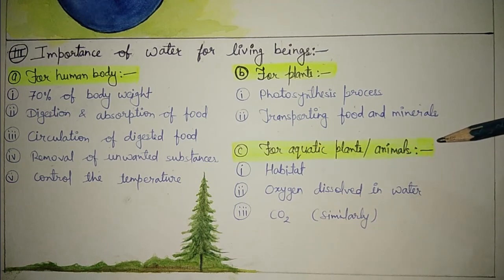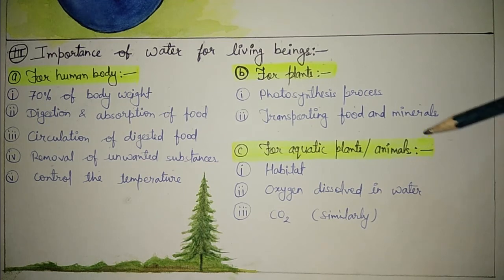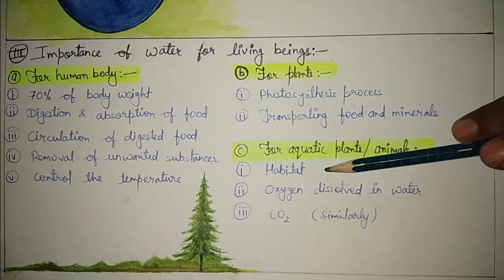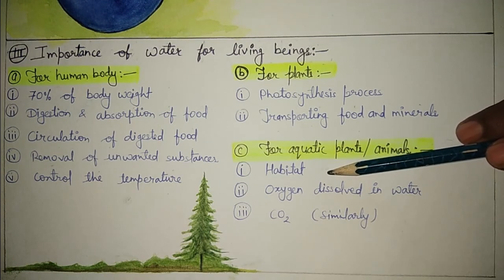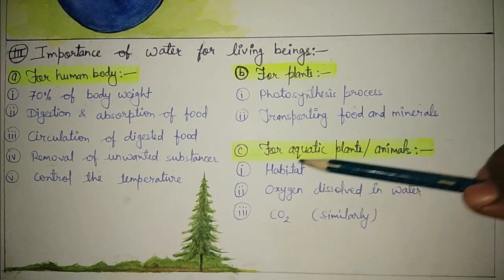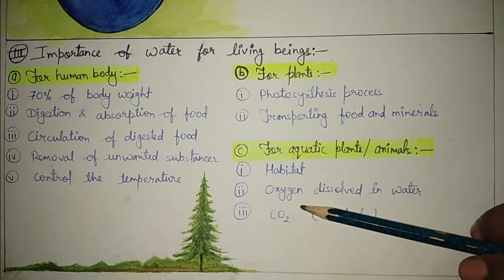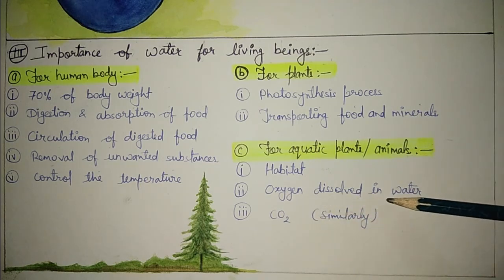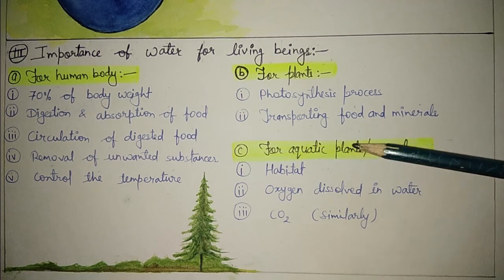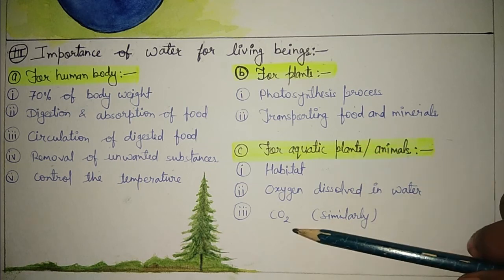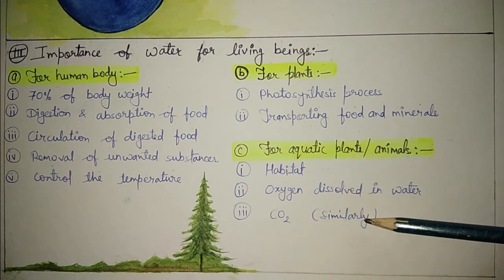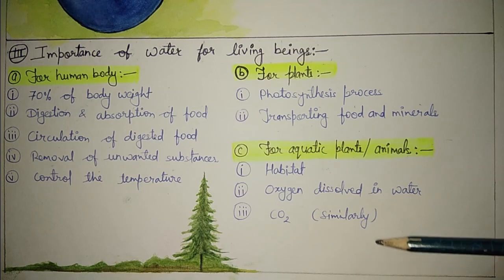Next, for aquatic plants and animals — water is also very important. Water is the habitat for this type of animals and plants; without it they cannot survive. Aquatic animals take oxygen from water, and aquatic plants take carbon dioxide from water. In this way, water is very important for living beings.